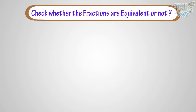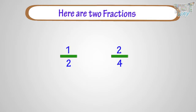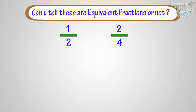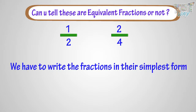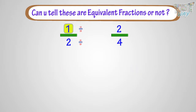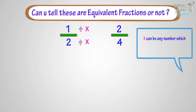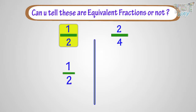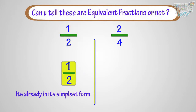Kids, now we will learn how we can check whether two fractions are equivalent or not. Here are two fractions. Can you tell these fractions are equivalent fractions or not? For this, we have to write the fractions in their simplest form. You have to divide both the numerator and denominator with the same number — it can be any number, 2, 3, or 4 — whichever is a divisor of both numerator and denominator. First, take the fraction with smaller numbers: 1 by 2. We cannot divide the numerator and denominator with any number, so it's already in its simplest form.